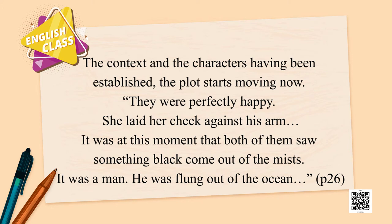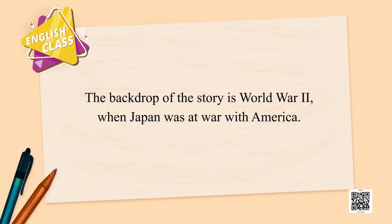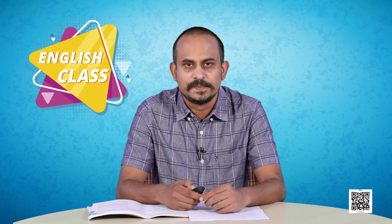They were perfectly happy, and then the plot suddenly takes a turn. She laid her cheek against his arm — it was at this moment that both of them saw something black come out of the mists. It was a man, flung out of the ocean. The backdrop of the story is World War II, when Japan was at war with America. Japan was on the side of the Axis powers and America on the side of the Allies. Japan had bombed Pearl Harbor in Hawaii in 1941, and the USA later dropped nuclear bombs on Hiroshima and Nagasaki in 1945.